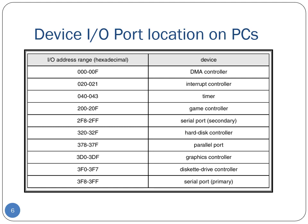Every I/O device in the system is accessed through a unique address. Typically each type of device has a reserved address range. This table shows the usual I/O port addresses for personal computers: for example, a timer gets address range 040–043 (hexadecimal), a game controller gets 200–20F, and a graphics controller gets 3D0–3DF.